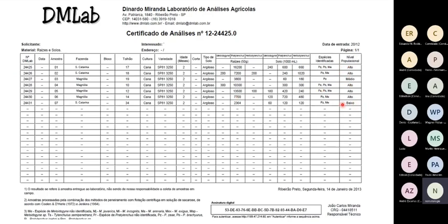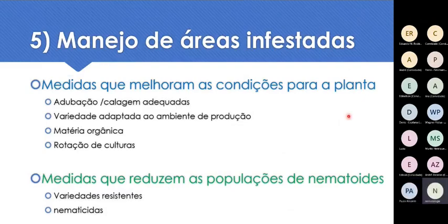Interpreto tudo isso e coloco o nível populacional ao lado. Na última coluna já está a interpretação de todos os dados. Precisam de manejo as áreas com população média e alta. Se a área tiver população baixa, ela não precisa de controle para nematóides.